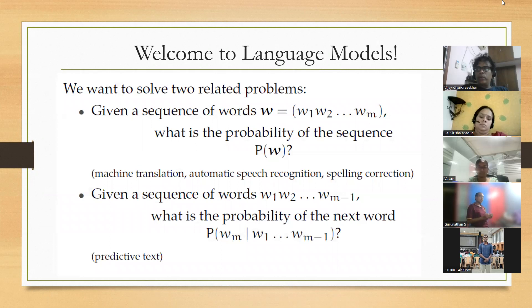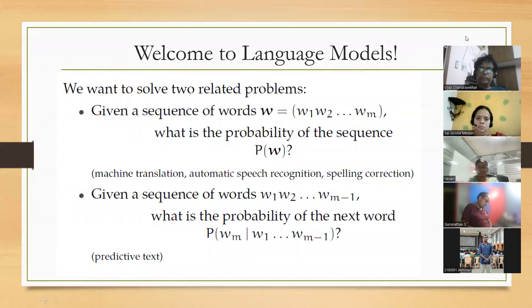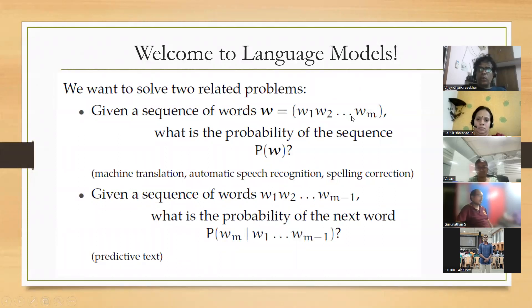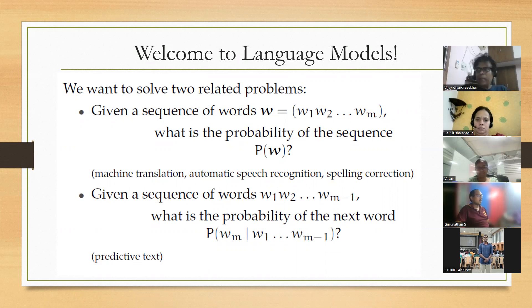What are we trying to do with language models? We're trying to solve two related problems. Given a sequence of words w1, w2, all the way up to wm, we're asking: what is the probability of this sequence?